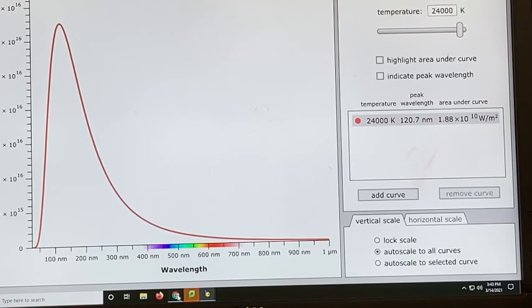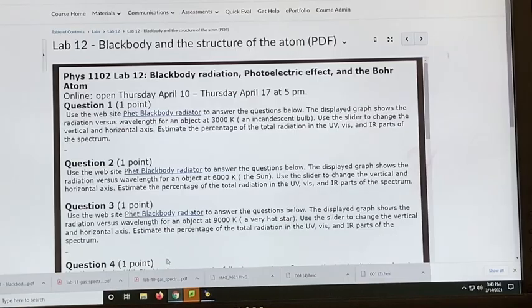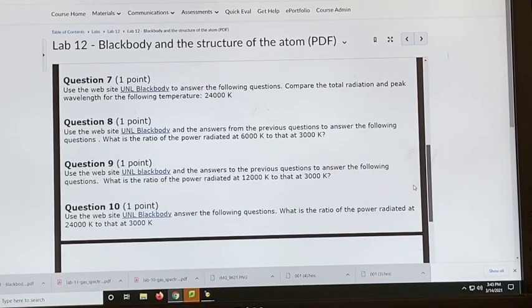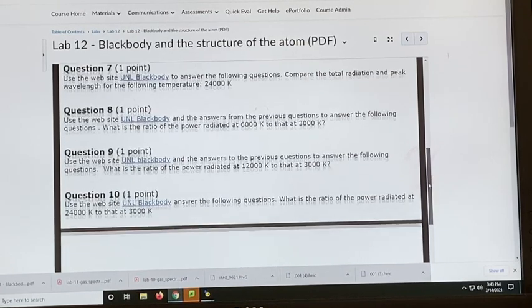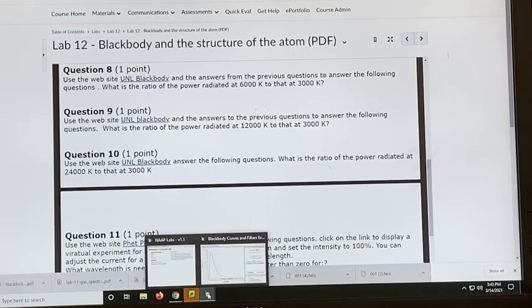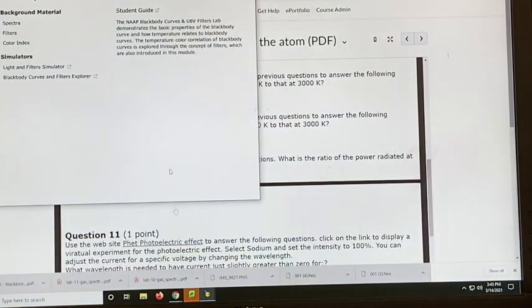And then the other questions relate to questions 8, 9, and 10. Compare what's the ratio of power 6K to 3K, 12K to 3K, and 24K to that K. So that is for that. So now we're going to go back, we're going to do the next part.